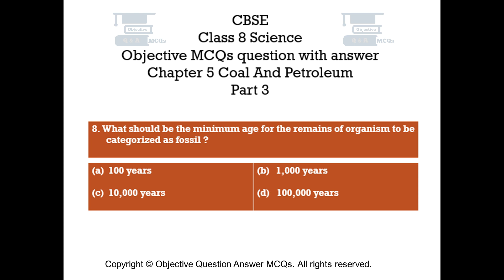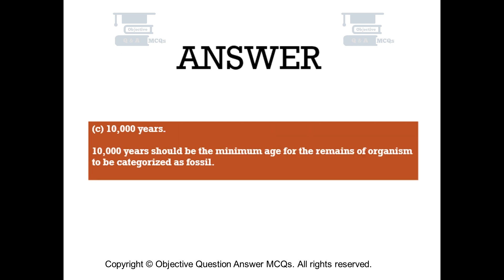Question number 8. What should be the minimum age for the remains of an organism to be categorized as a fossil? Option A: 100 years. Option B: 1,000 years. Option C: 10,000 years. Option D: 100,000 years. The right answer is Option C, 10,000 years. 10,000 years should be the minimum age for the remains of an organism to be categorized as a fossil.